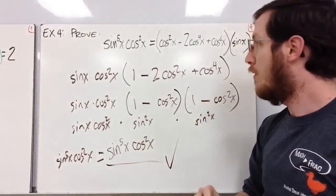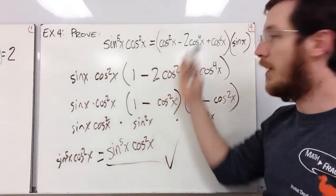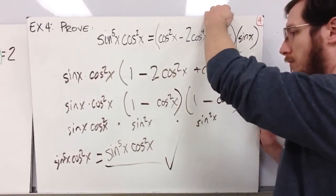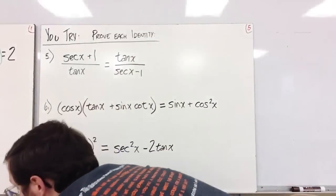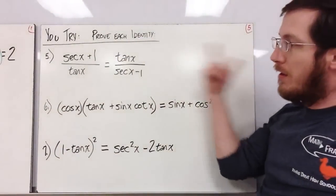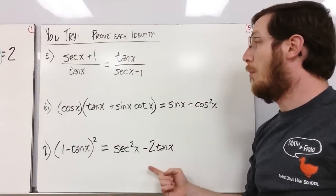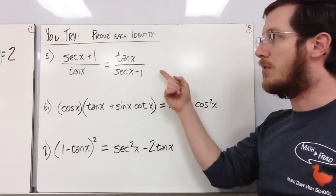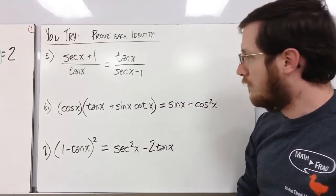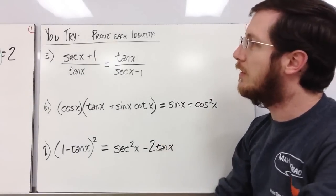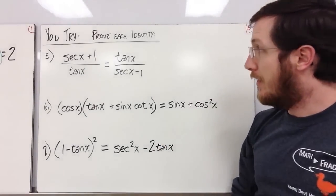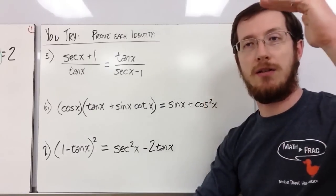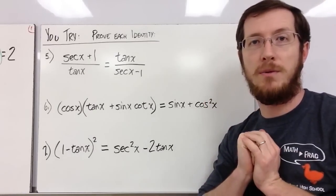Remember: you're not done until you've manipulated one side of the equation to make it look like the other. Here are three more identities I'd like you to prove — jot these down in your notes and give yourself space to work them out. We'll discuss them in the next class. Make sure you copy down that list of general strategies for solving proofs on the website.